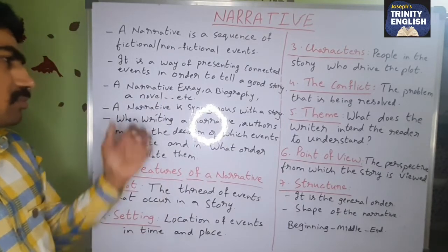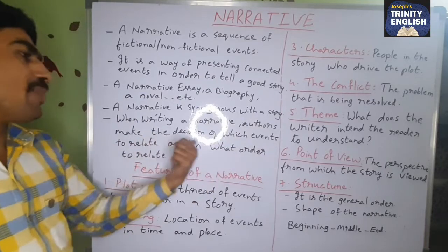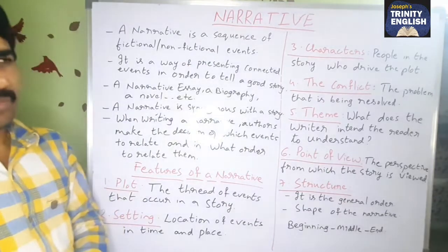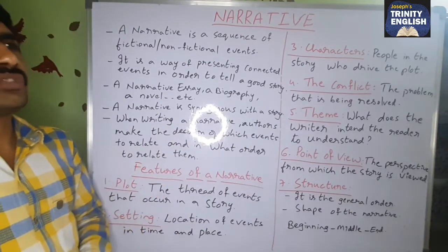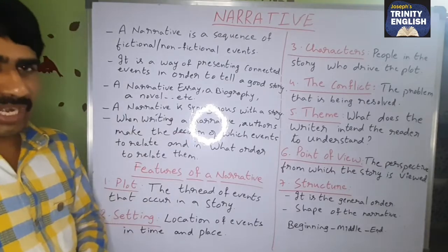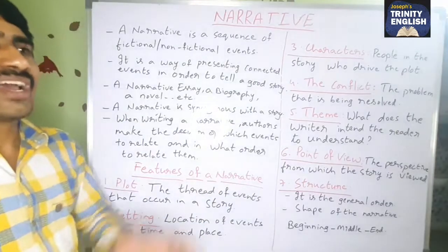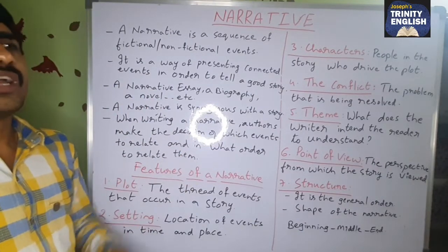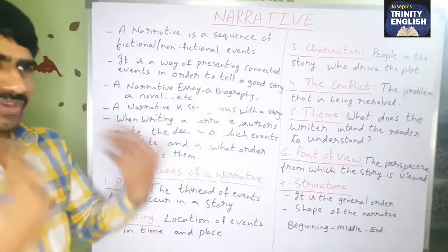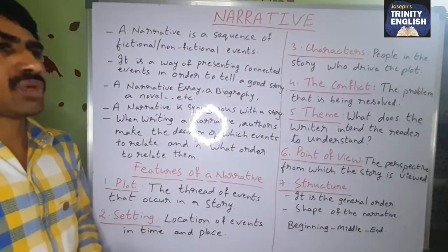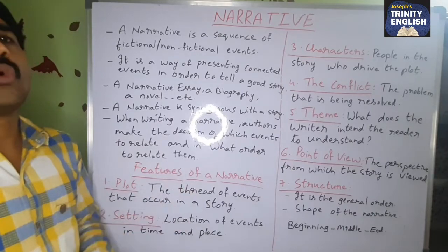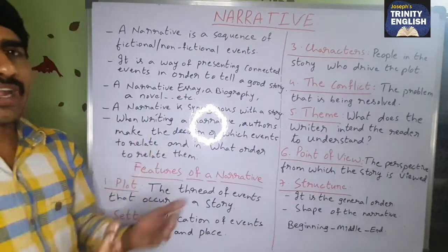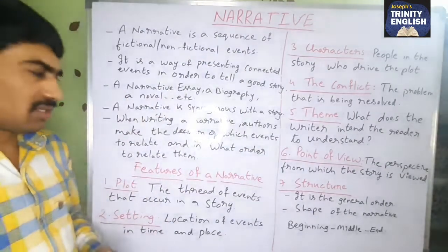When writing a narrative, authors make the decision of which events to relate and in what order to relate them. What are the events to be related, in what order and how they are supposed to be related — all those things are determined according to the author's will and wish, in whatever way they want to narrate it.